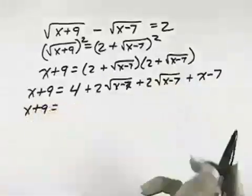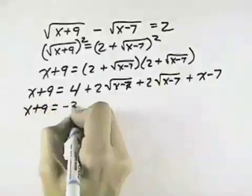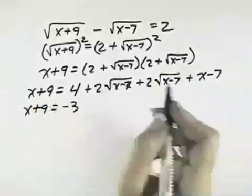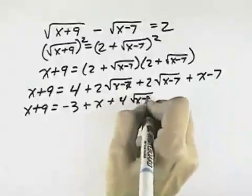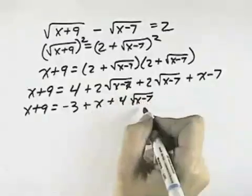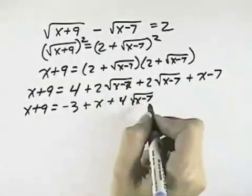So I have x plus 9 equals, let's see, 4 minus 7 is negative 3, plus x, plus 4 times the square root of x minus 7. So I want to get 4 times the square root of x minus 7 by itself to eliminate that radical.